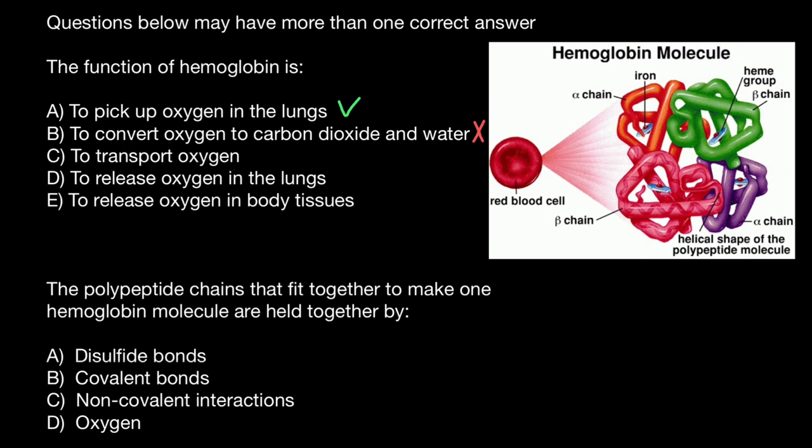Variant C, to transport oxygen. This is also correct statement. Variant D, to release oxygen in the lungs. This is wrong statement. But the next statement to release oxygen in the body tissues is the correct statement.